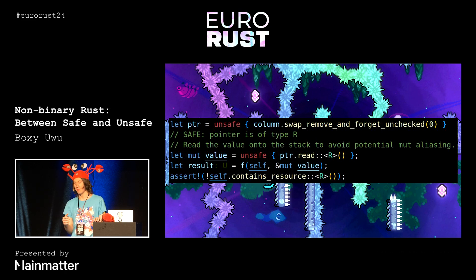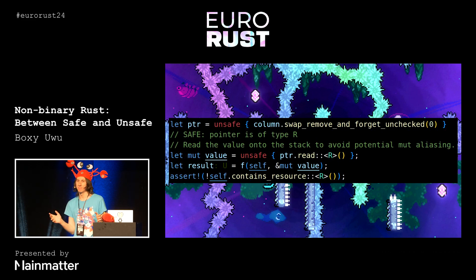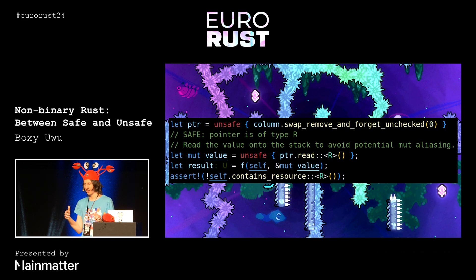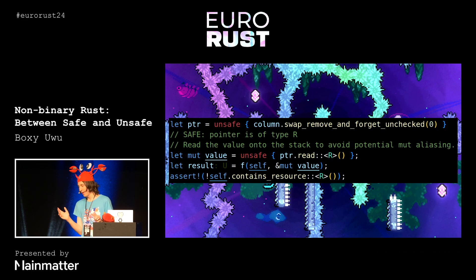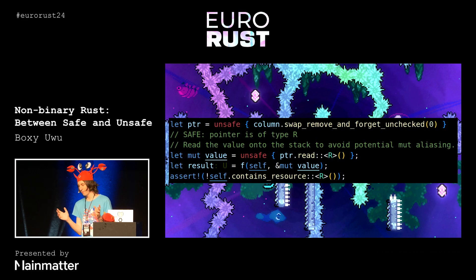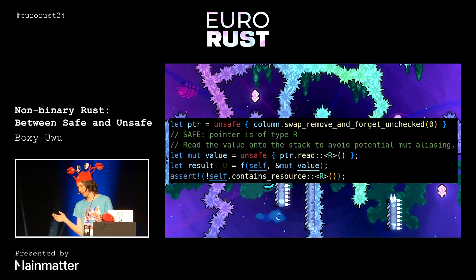What can happen is that function can cause stuff to be removed from the vec and completely stomp all over the reference we've passed into it, which would be unsound. Having this owning pointer type means the lifetimes are completely checked by the borrow checker, which catches this kind of thing.